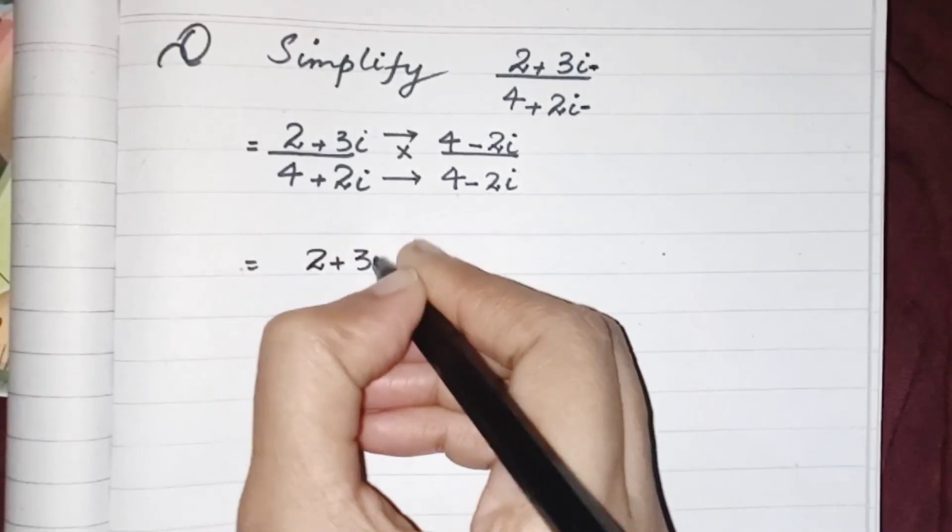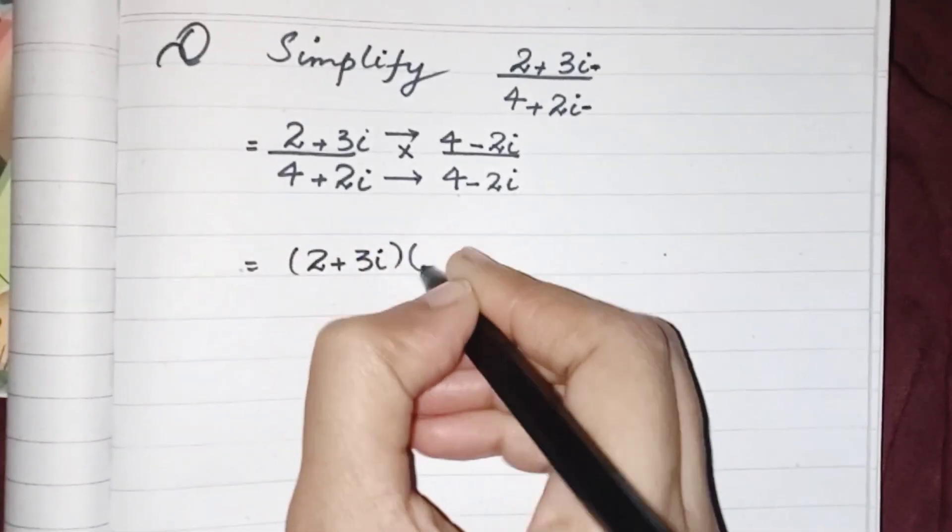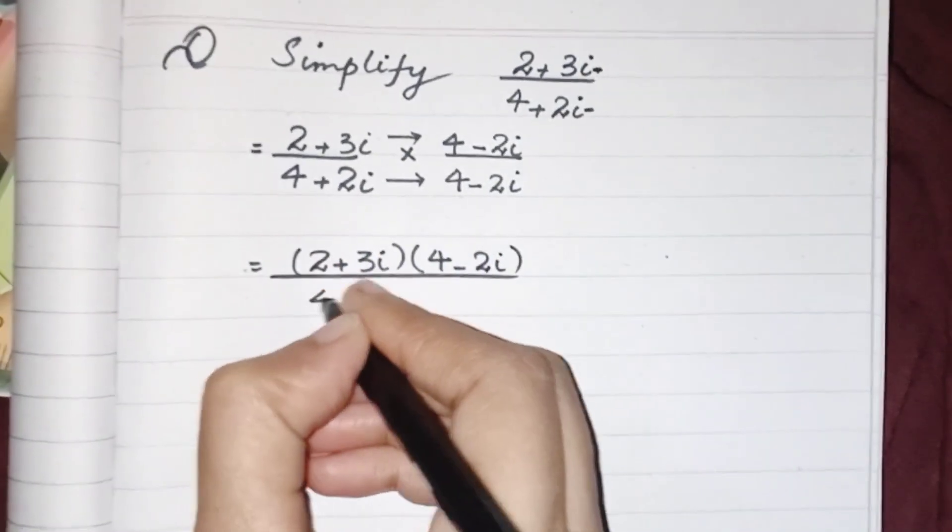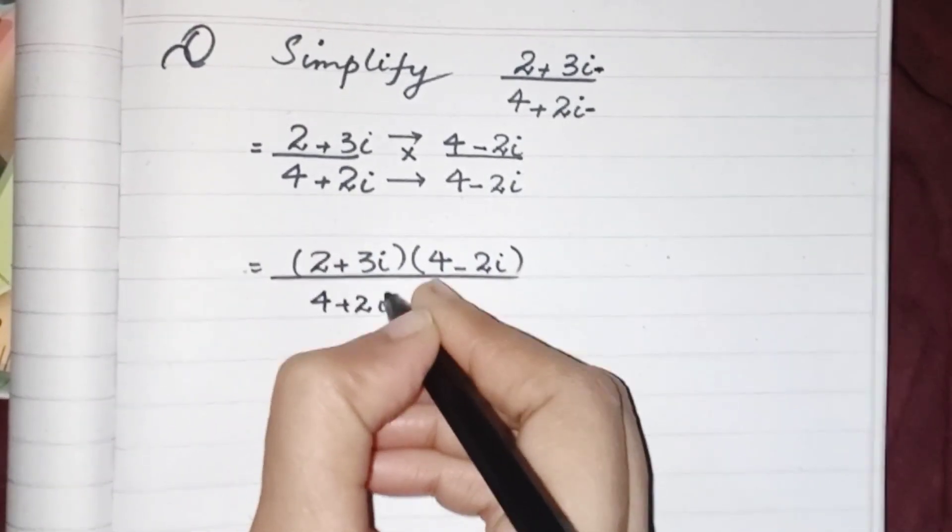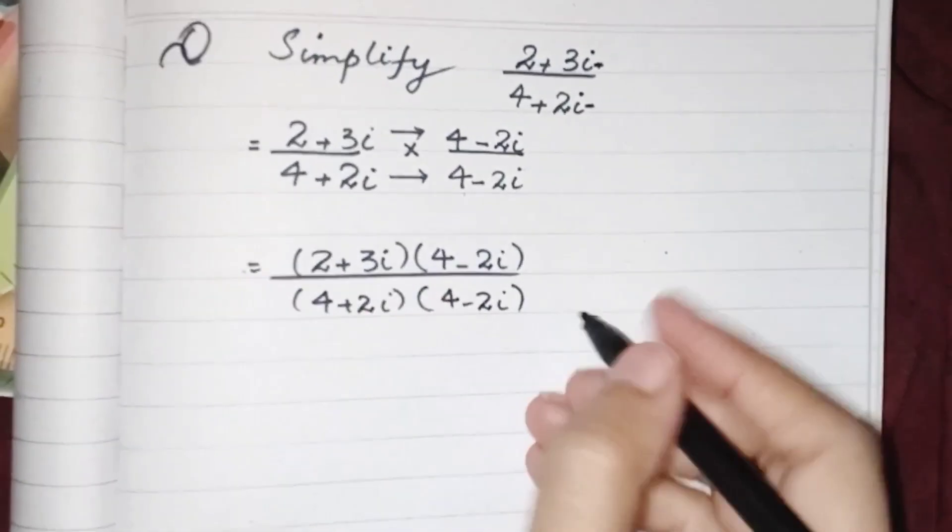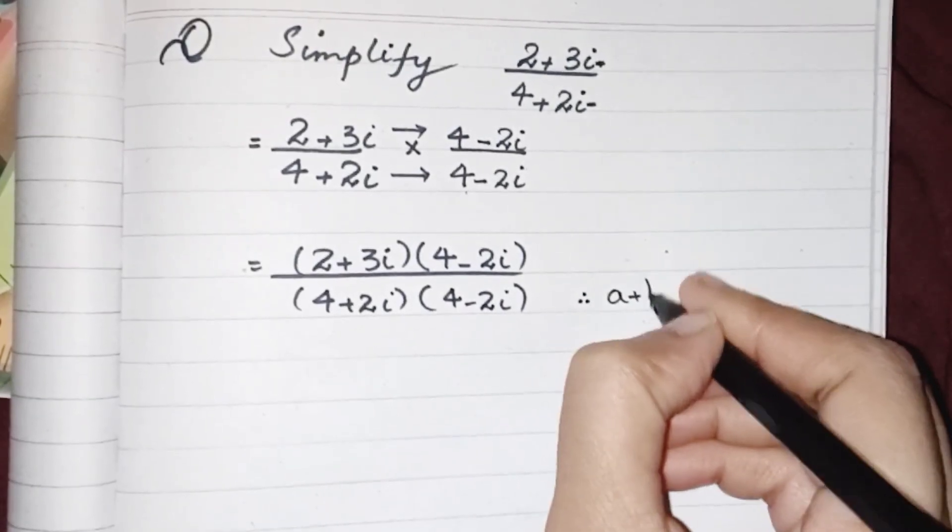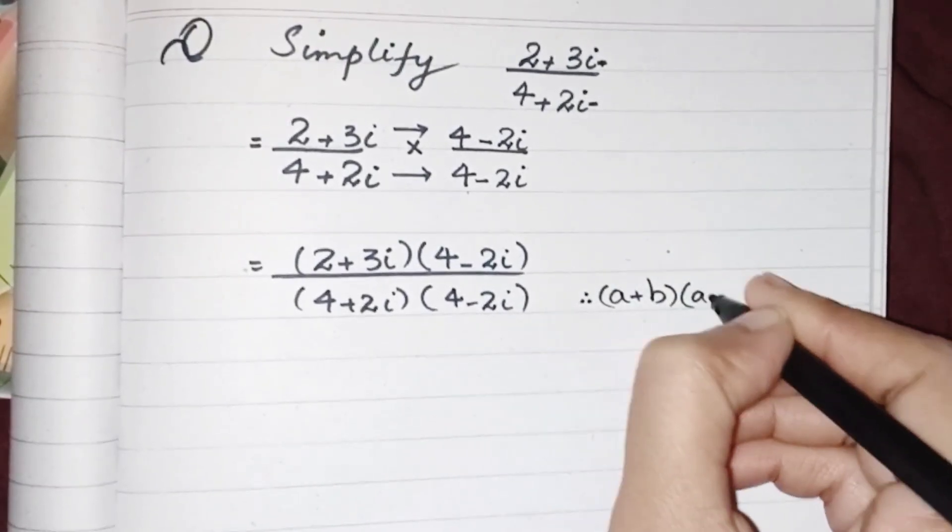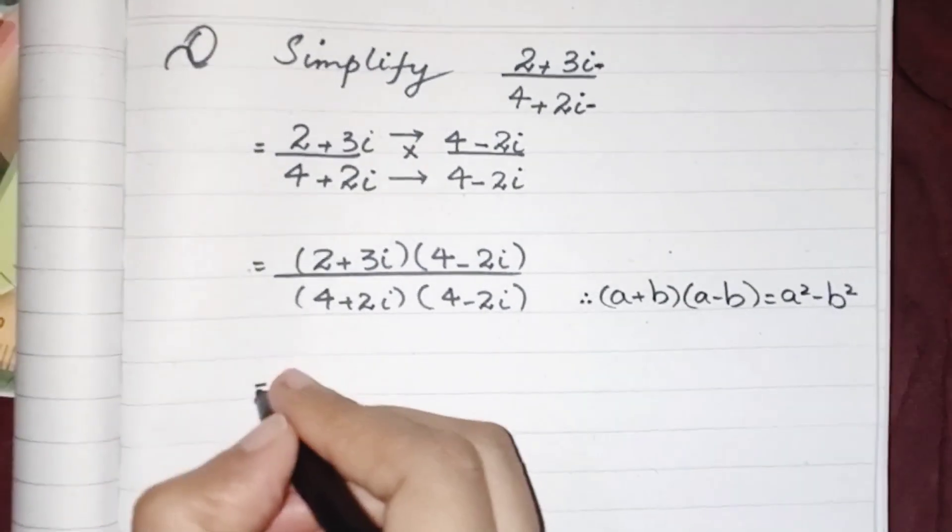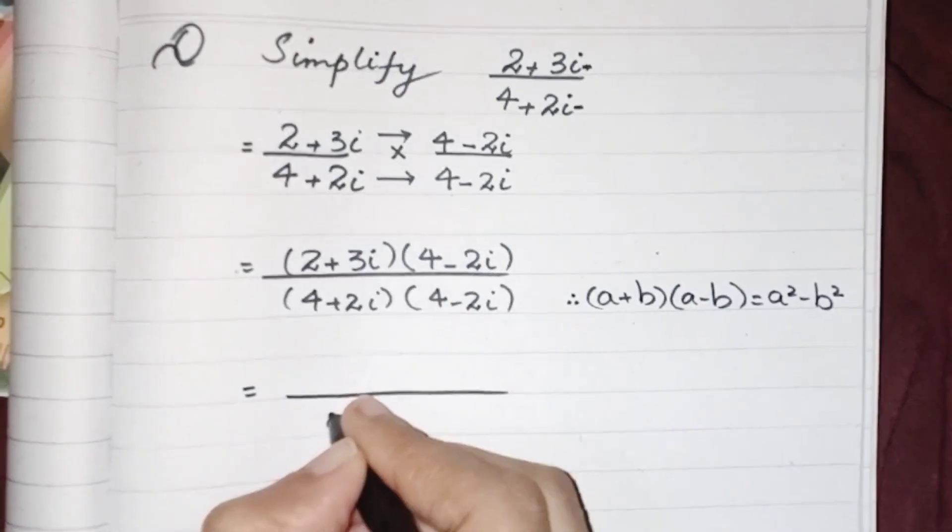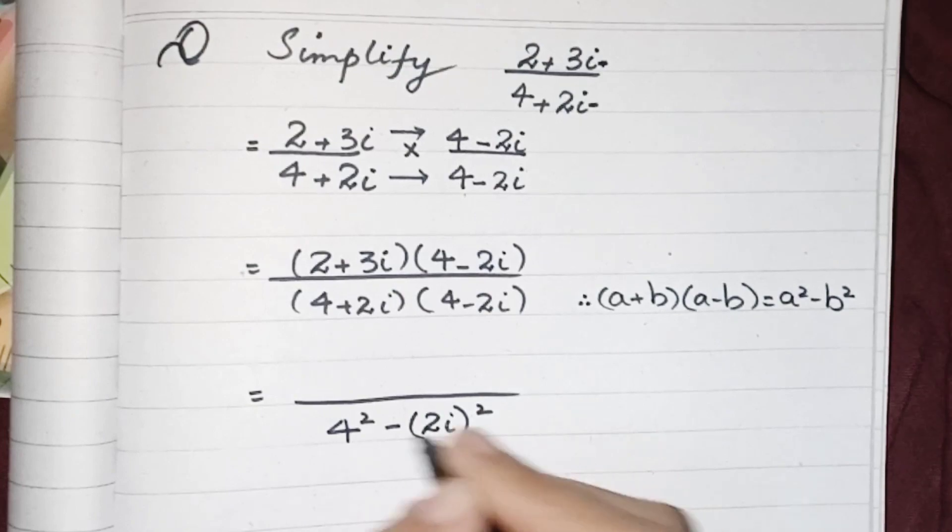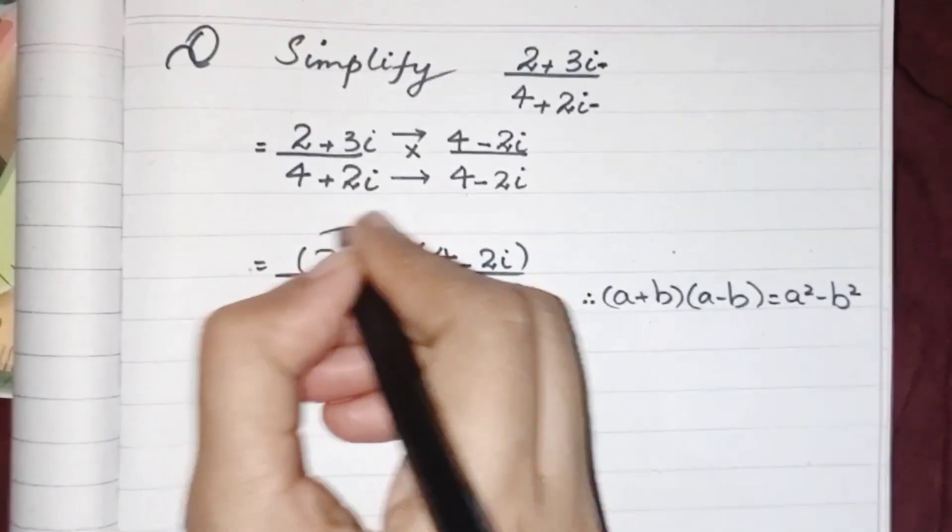Now numerator will be multiplied by numerator and denominator will be multiplied by denominator. 2 plus 3i multiplied by 4 minus 2i in the denominator, 4 plus 2i times 4 minus 2i. Here we have a formula of a plus b and a minus b, which will be equivalent to a squared minus b squared.